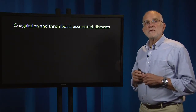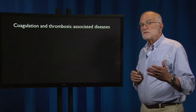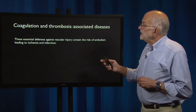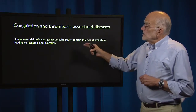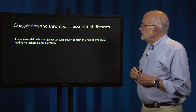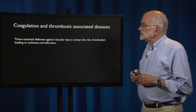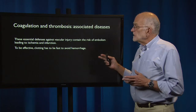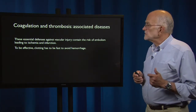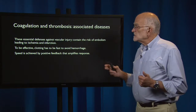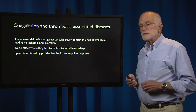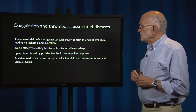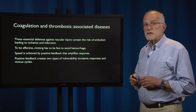Coagulation and thrombosis are both very good defensive reactions to wounding, but they have associated diseases as well. They are defenses against vascular injury, and they contain the risk of embolism that leads to ischemia and infarction. To be effective, clotting has to be fast to avoid hemorrhage — that speed is achieved by positive feedback that amplifies the response. Positive feedback creates two kinds of vulnerabilities: an excessive response and vicious cycles.